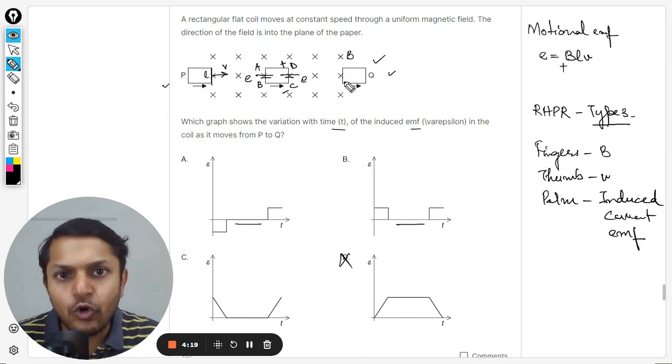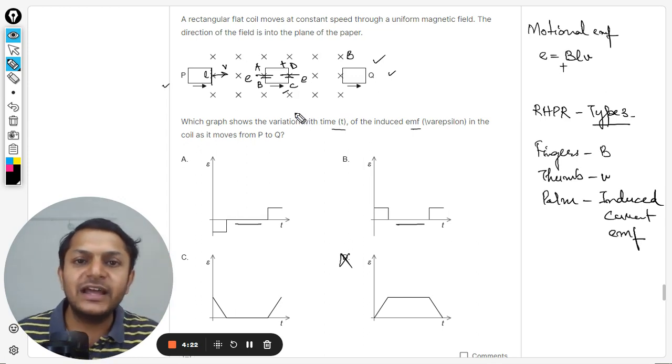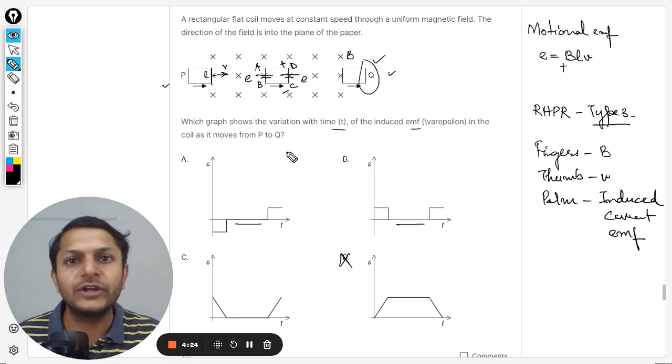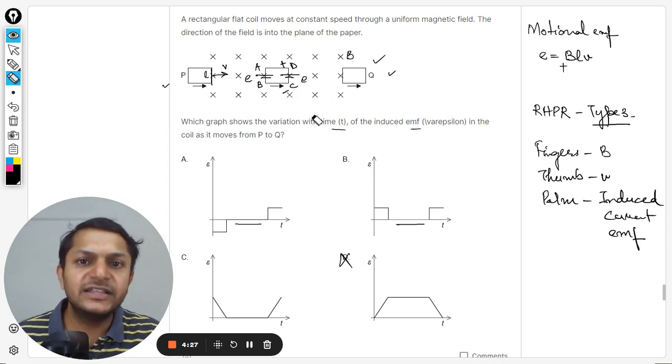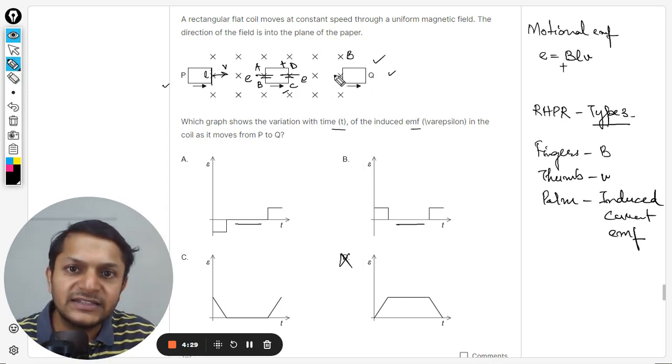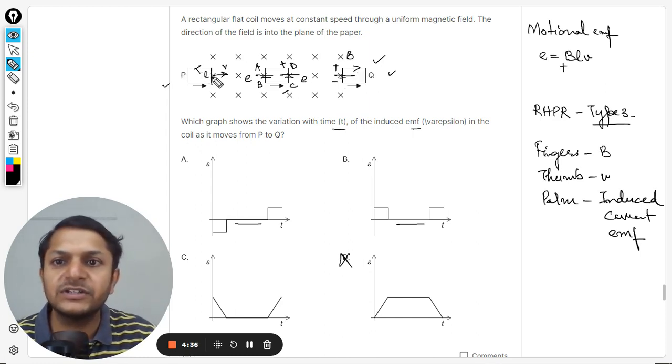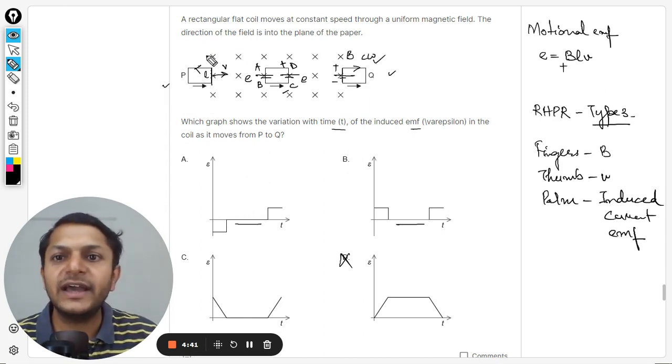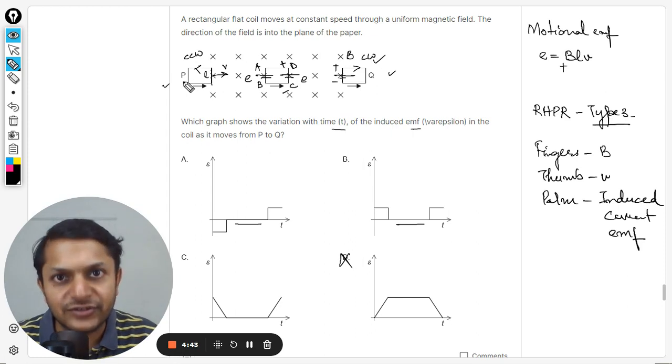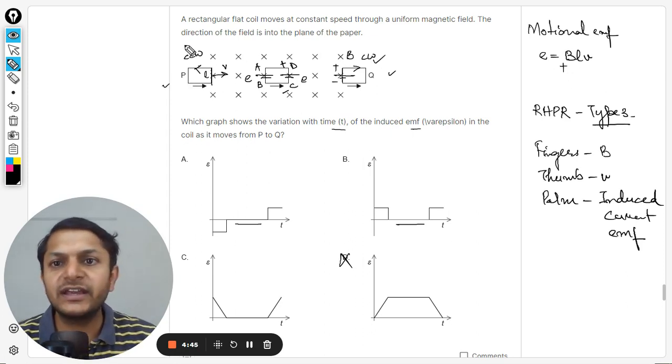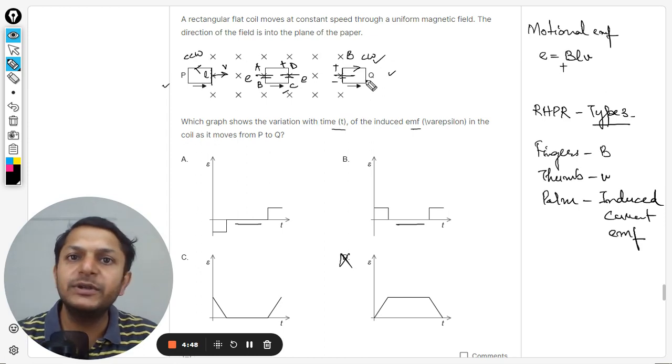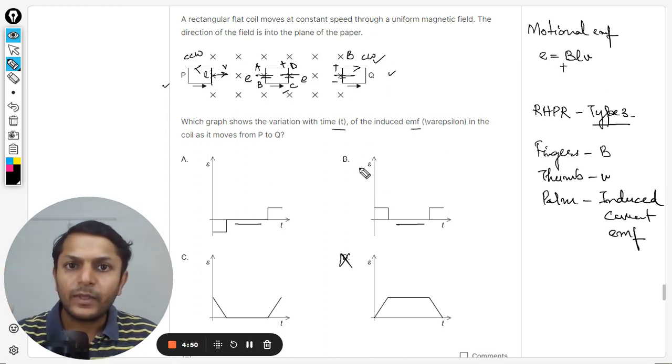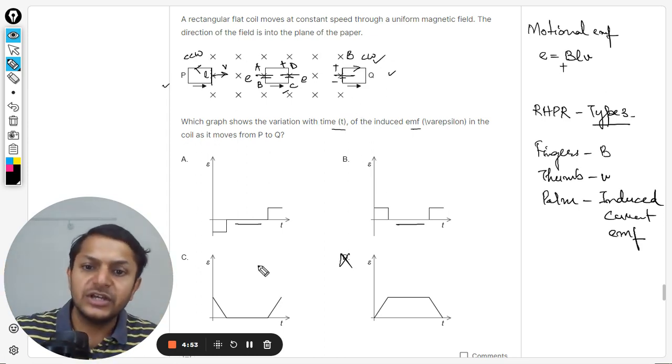When it goes towards Q and it gets out, at that time this is already out and so no EMF is being generated by this part, but the other part is generating an EMF. This is positive, this is negative, but now definitely the current is in the opposite direction. Here the current was anticlockwise and this is clockwise, so current has changed its direction. Earlier we were taking this direction as positive, so this will be taken as negative.